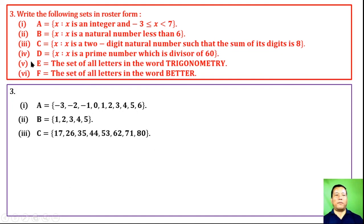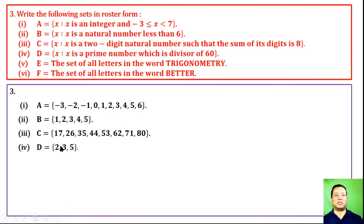D = {x : x is a prime number which is a divisor of 60}. The prime divisors of 60 are 2, 3, and 5. So D = {2, 3, 5}.